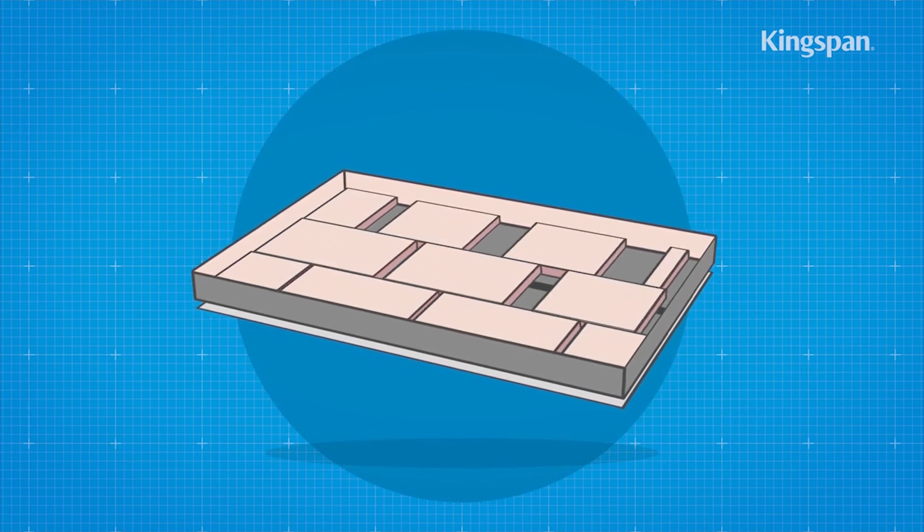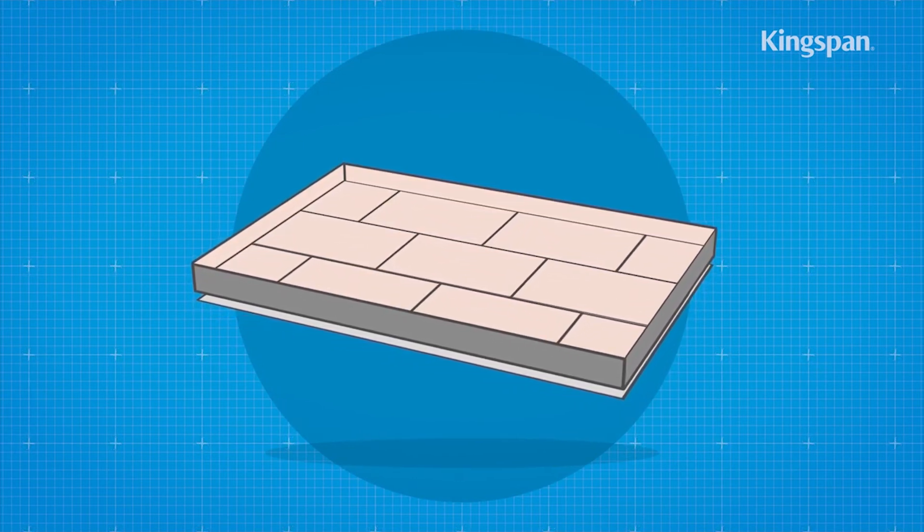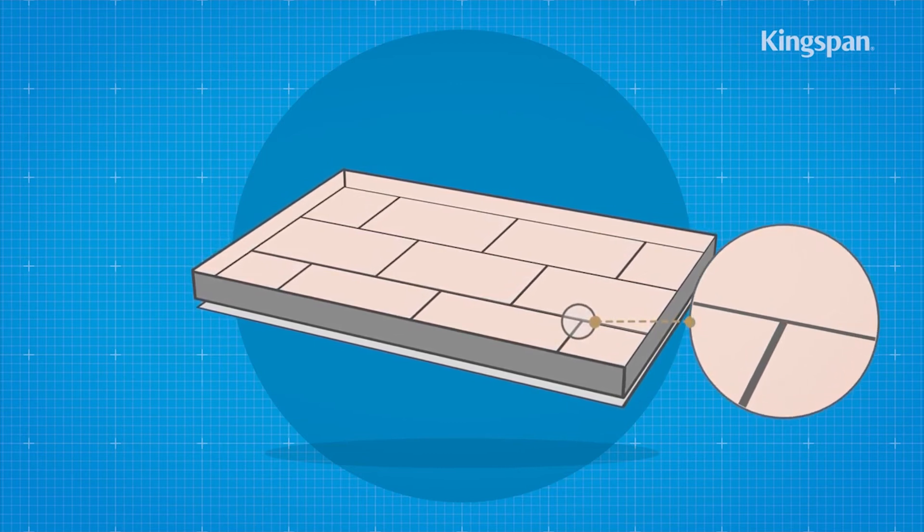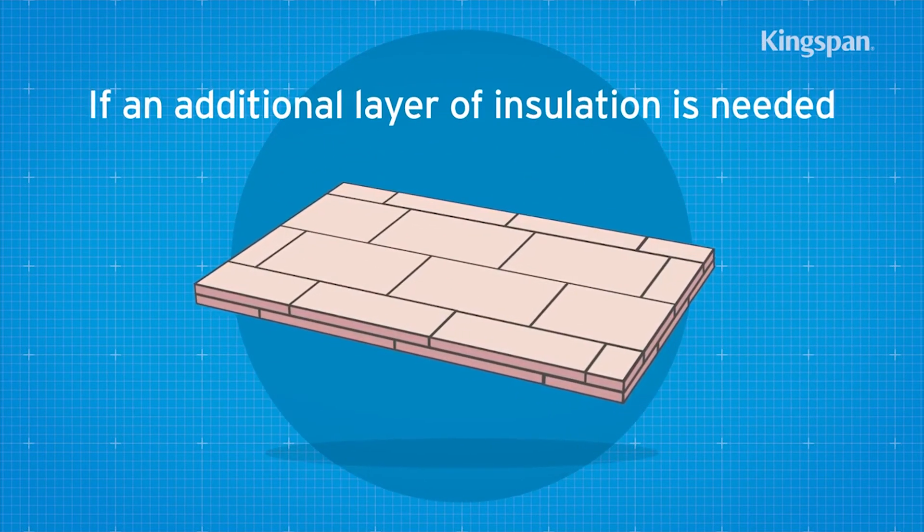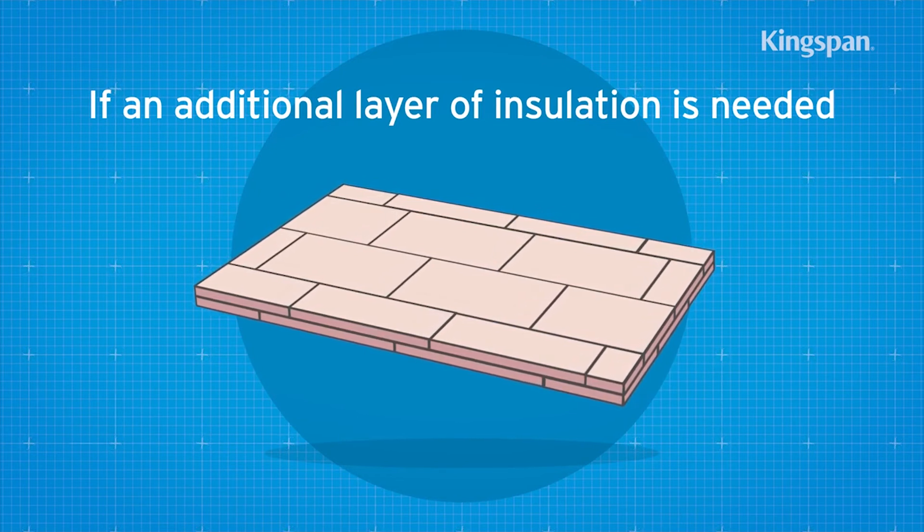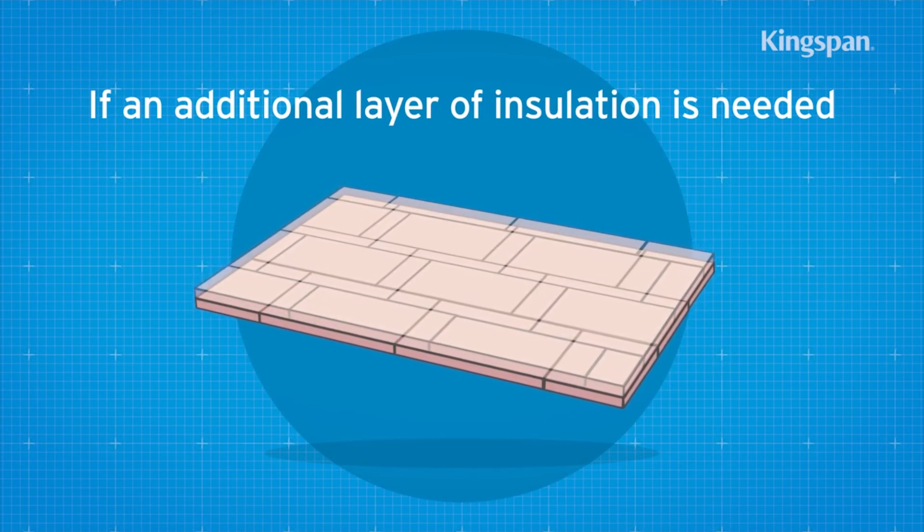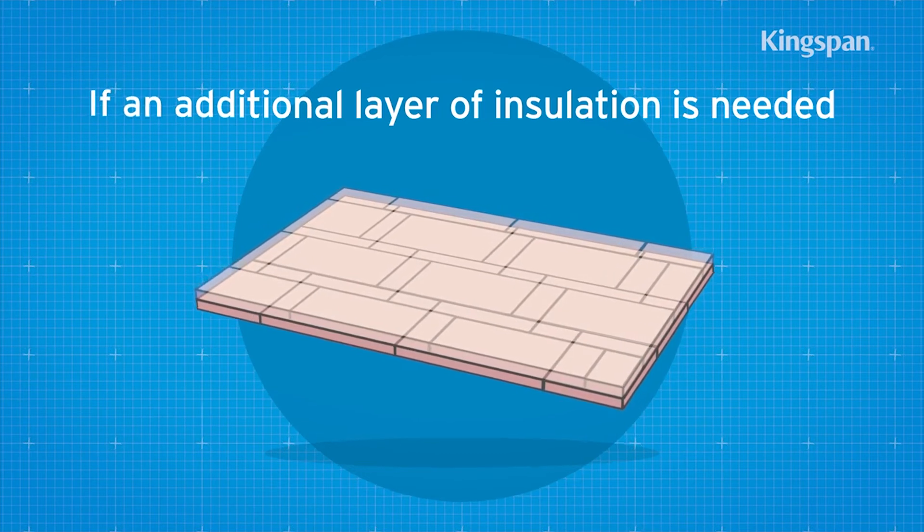The insulation boards should always be loose laid, break bonded with joints lightly butted. If an additional layer of insulation is needed, it should be horizontally offset so that the board joints in the adjacent layers do not coincide with each other.